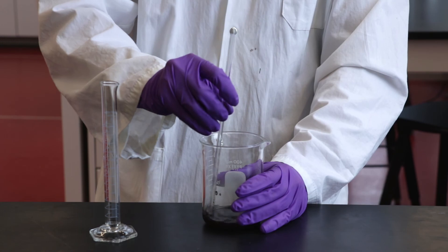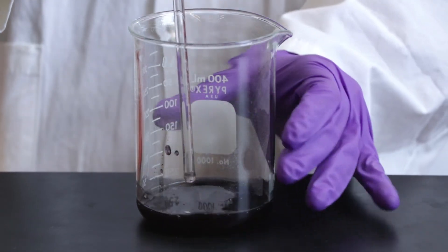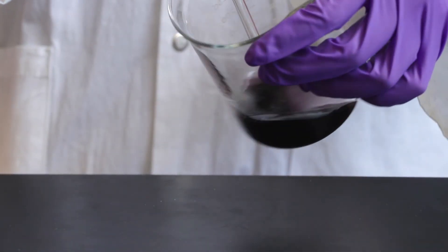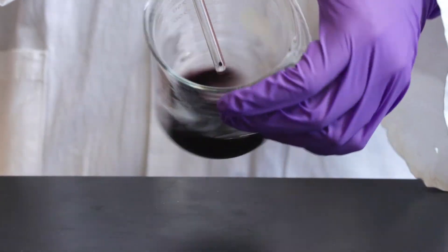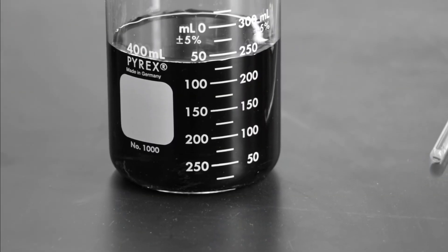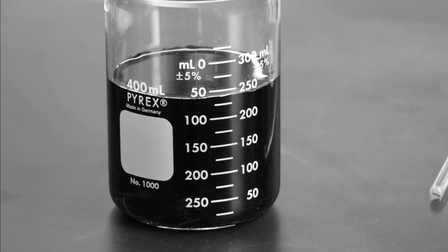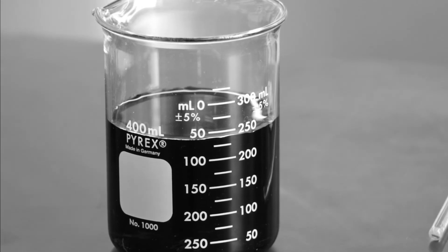Stir with a glass rod to ensure that all of the Kool-Aid is dissolved. Sometimes more solvent may be needed to dissolve all of the solid. Beakers should never be filled more than 65% of their total volume as they can become difficult to manipulate.